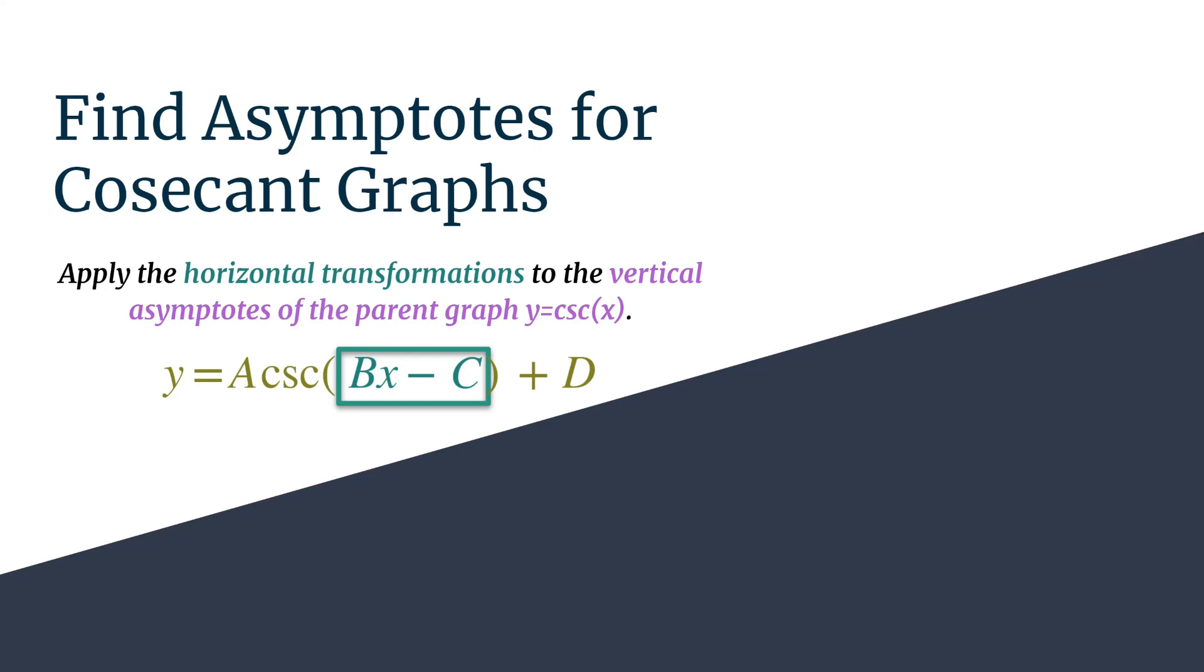We're going to take that and set that equal to the vertical asymptotes of the parent graph cosecant. If you're not familiar with where those asymptotes are, go ahead and take a look at that graph. They happen at 0 plus pi k, where k is an integer. So all we have to do to find our asymptote generating equation for any cosecant equation is to set these two things equal.